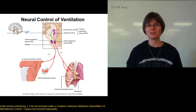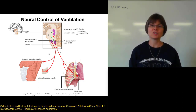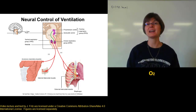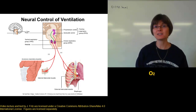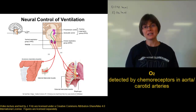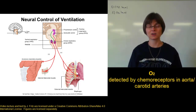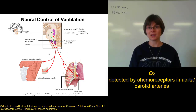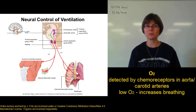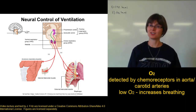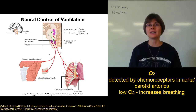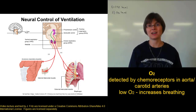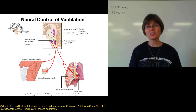A second factor that controls the respiratory rate is the oxygen level. What's counterintuitive is that oxygen level is actually less important to controlling the respiratory rate than the carbon dioxide level, but it is still important. The chemoreceptors found in the aorta and internal carotid artery can detect oxygen levels as well as CO2 levels. When oxygen levels in the blood are too low, that sends a signal up to the dorsal respiratory group, which sends a signal to the ventral respiratory group to increase the respiratory rate so you breathe more and can increase the oxygen level in your blood.